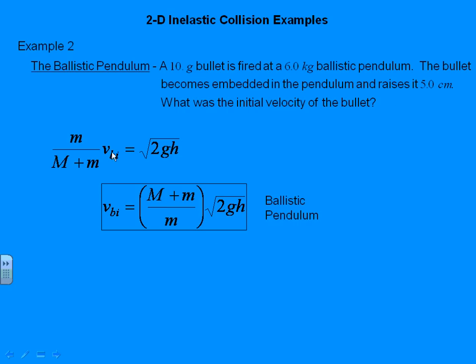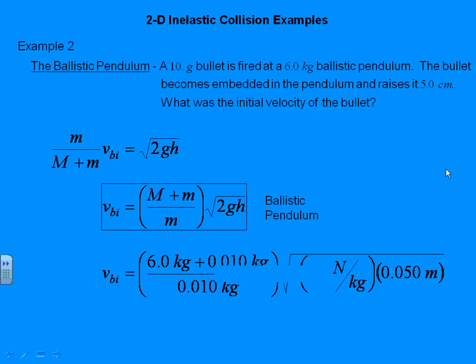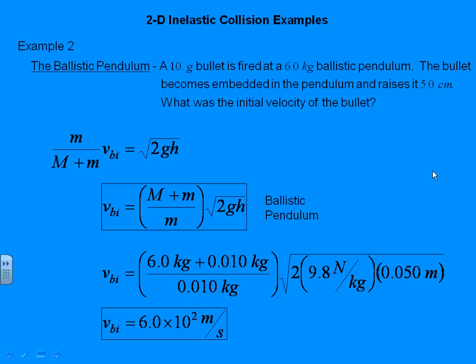Those are all given numbers. We do have to be careful with units: we can't mix grams and kilograms, and since g is 9.8 newtons per kilogram and a newton is a kilogram meter per second squared, we can't have centimeters either. So we convert: bullet mass to 0.010 kilograms and height to 0.050 meters. Plugging everything in, we get an initial velocity of the bullet of about 600 meters per second — 6.0 times 10 to the second meters per second to 2 significant figures.